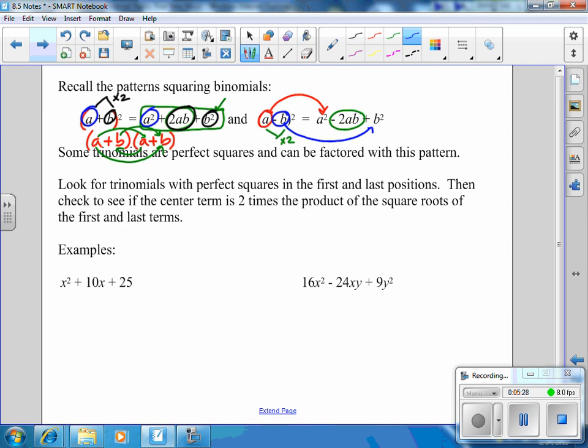So the very first one, x squared plus 10x plus 25. The first thing I know is that this first term is a perfect square. I can get x squared by doing x squared, or x times x. And then I also notice that 25 is a perfect square. To get 25, all I have to do is square 5.